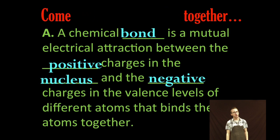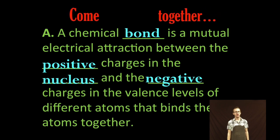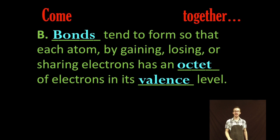Now, not in your notes, but a quick refresher. Remember that chemical bonds are just mutual electrical attractions between positive charges in the nucleus and the negative charges in the valence level of different atoms that bind those atoms together. Keep in mind that bonds tend to form so that each atom by gaining, losing,